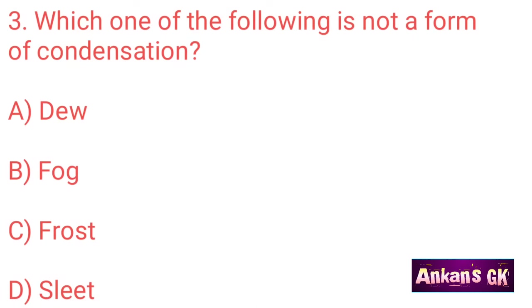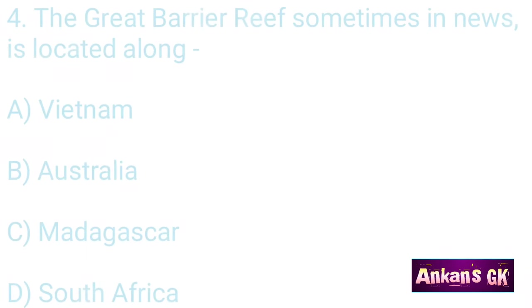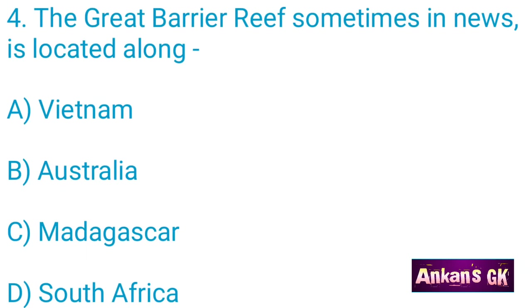Which one of the following is not a form of condensation? The answer is D: slit. The Great Barrier Reef, sometimes in the news, is located along — the answer is C: Madagascar.